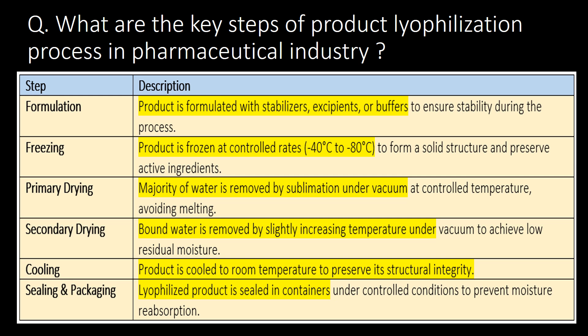The third step is primary drying, where the majority of water is removed by sublimation under vacuum. The fourth step is secondary drying, where bound water is removed by slightly increasing temperature under vacuum. The fifth step is cooling, where the product is cooled to room temperature to preserve its structural integrity.